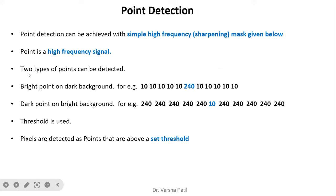A point is a high-frequency signal. Two types of points can be detected: a bright point on a dark background — for example, a continuous region of value 10 is a low-frequency region, but a transition from 10 to 24 and back to 10 indicates a bright point on dark background — and a dark point on a bright background, where background is 240 and a value of 10 appears abruptly.